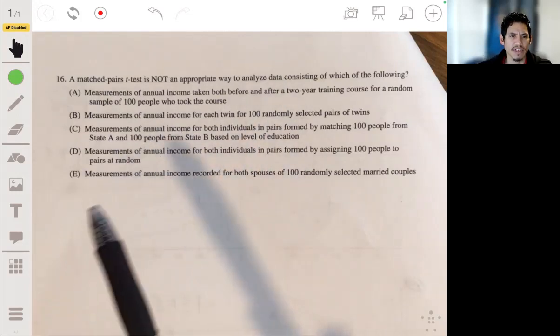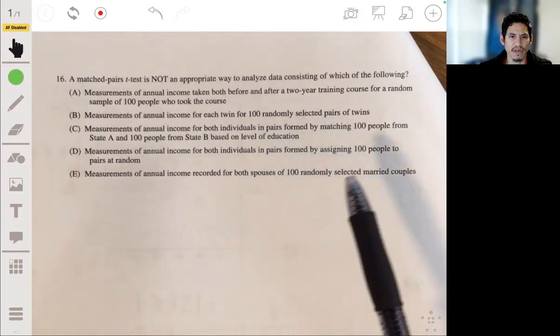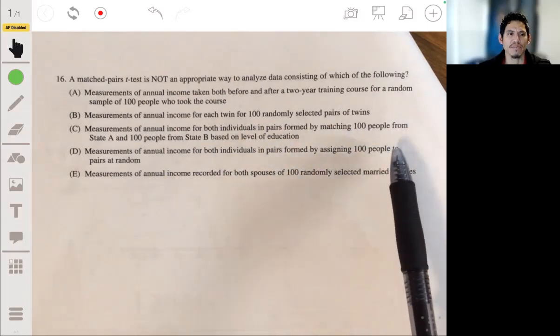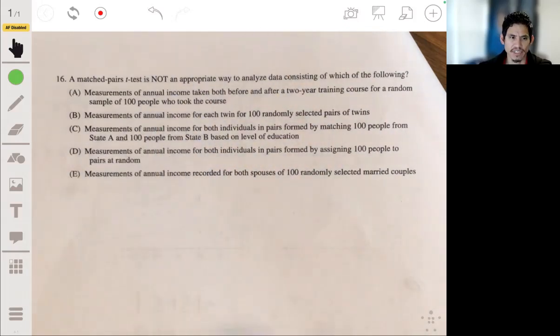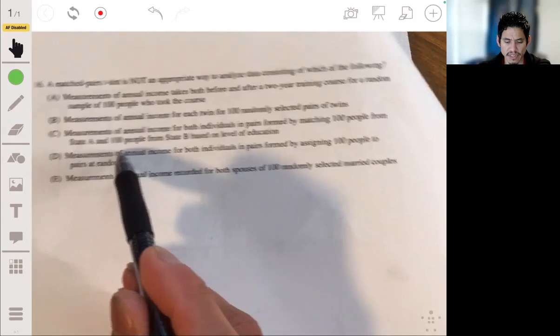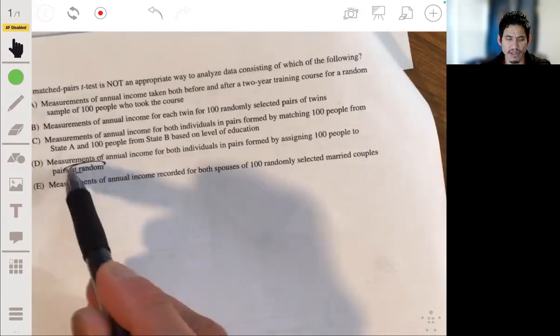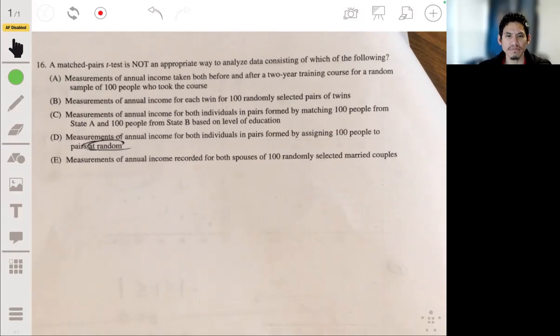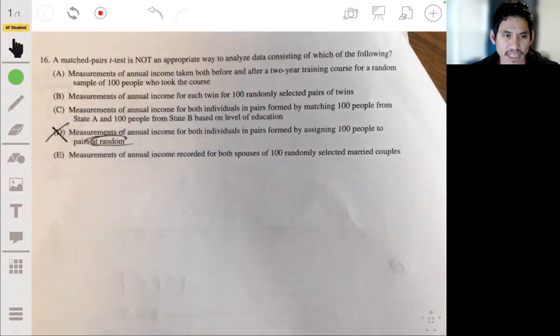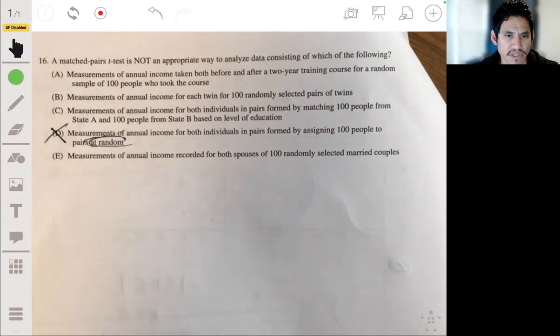D: Measurements of annual income for both individuals in pairs formed by assigning 100 people to pairs at random. Okay, so you're not accounting for some of the factors here. You're just making pairs at random. So this wouldn't be a good test. It wouldn't work for the situation.